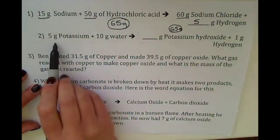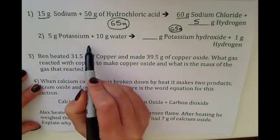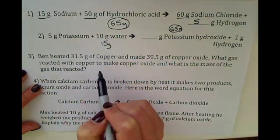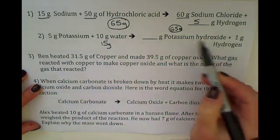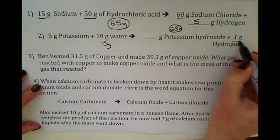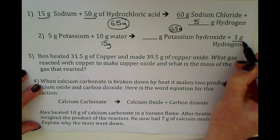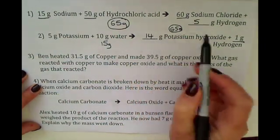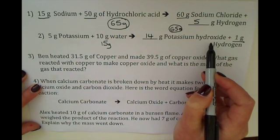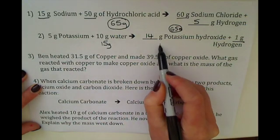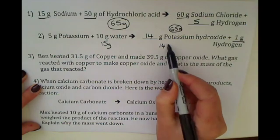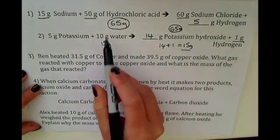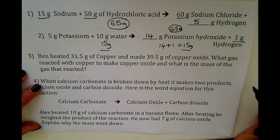For question 2: 5 grams of potassium and 10 grams of water gives 15 grams on the left side. We have 1 gram of hydrogen being released, therefore we must have 14 grams of potassium hydroxide — because 14 plus 1 makes 15 grams, the same as on the left hand side of the equation.